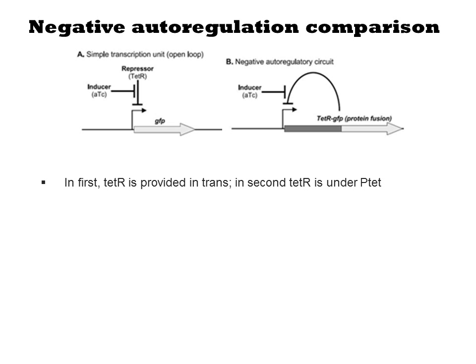They describe two different gene configurations. In the first case, GFP is placed under a simple transcriptional unit composed of the TET promoter. The TET promoter is repressed by the TET repressor, TETR. Addition of the small molecule anhydrotetracycline, or ATC, will de-repress TETR resulting in transcription.